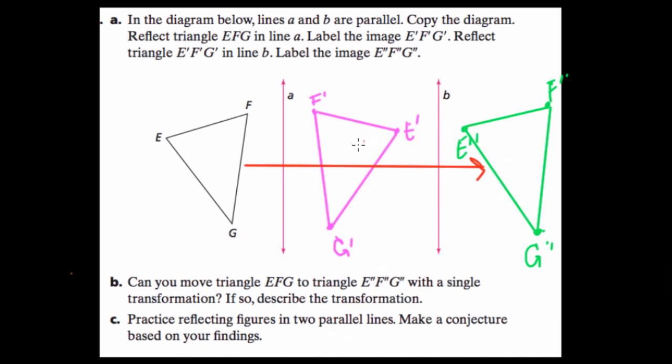Well, the conjecture is then, if you reflect a shape twice over two parallel lines, right, that's the same thing as a translation. So there is a way to use reflections to create translations, and this kind of demonstrates that process. Alright, I hope you enjoyed.